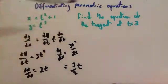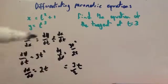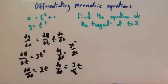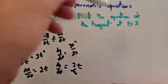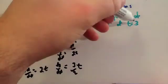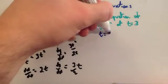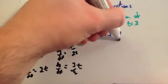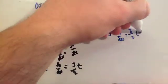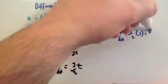So we've differentiated the parametrics and got dy/dx equals 3t/2. To find the gradient of the tangent we put in the t value. When t equals 3, dy/dx equals 3/2 times 3, which gives 9 over 2. So the gradient of the tangent is 9 over 2.